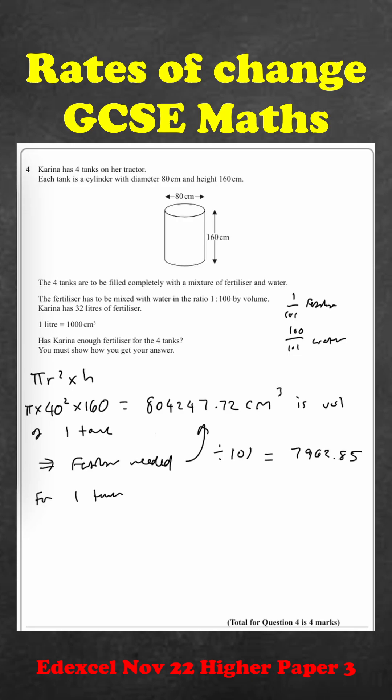So that is for one tank but we need four tanks. Therefore I'm going to do that number and multiply by four and I get 31851.39 centimeters cubed.